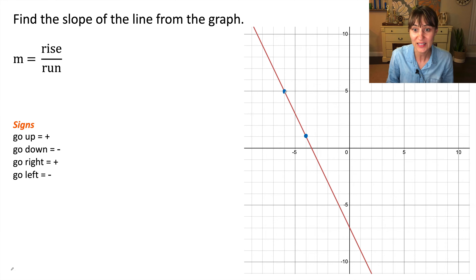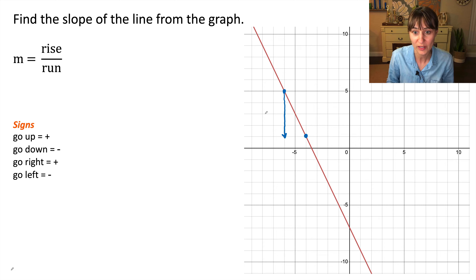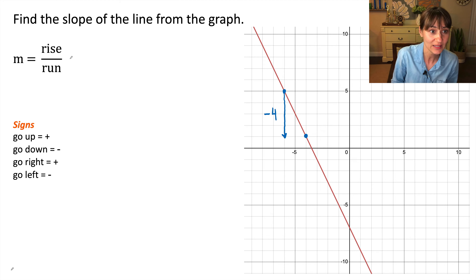Let's count squares. We are going to travel down first: one, two, three, four. We went down four units, so we will write negative four because we went down. Our rise is negative four.